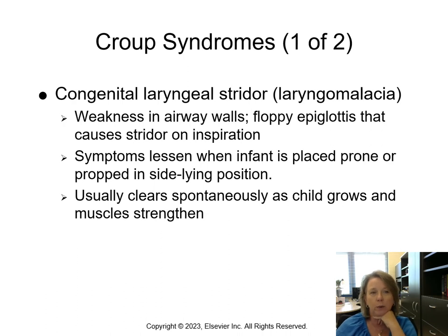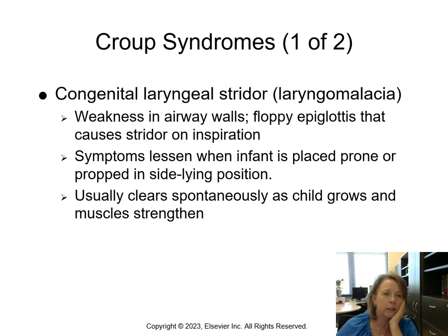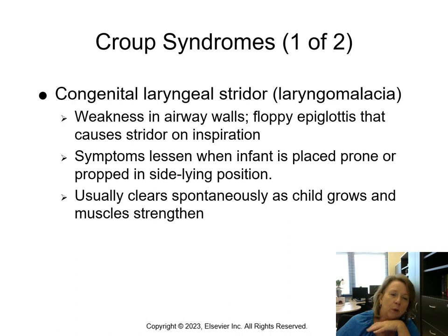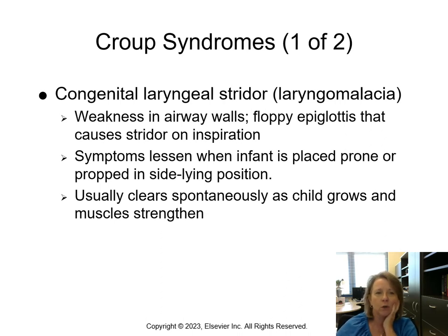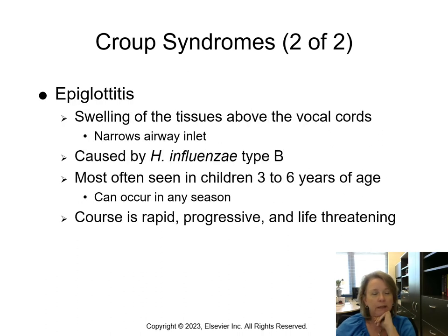Croup syndromes include congenital laryngeal stridor, which is due to weakness in the airway walls — a floppy epiglottis — and it causes stridor upon inspiration, which can be very concerning. Symptoms usually lessen if we place them in a prone or sidelying position to help support the airway. It usually clears spontaneously as the child grows and the muscles strengthen, so we want to reassure the family and give them peace of mind.